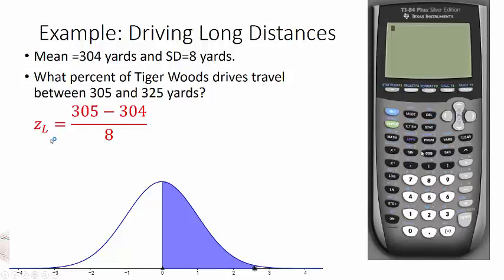So I'm going to call this ZL, like because there are so many Zs. This is Z on the lower end, or the left. So I have 305 minus 304, and I divide by 8, and I get 0.13. So it's slightly above the average. And the area to the left of that, if I look it up in the table, is 0.5517. So this white area right here.